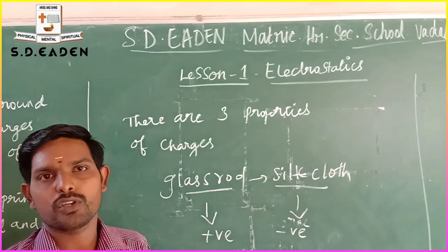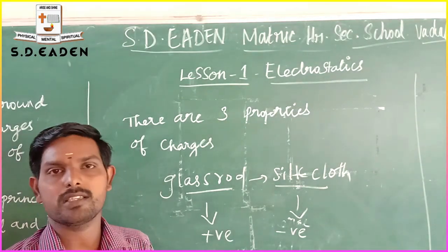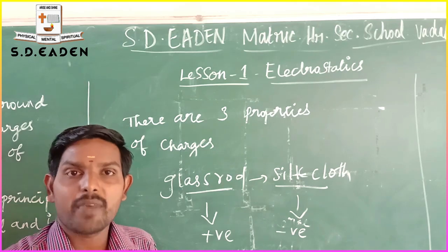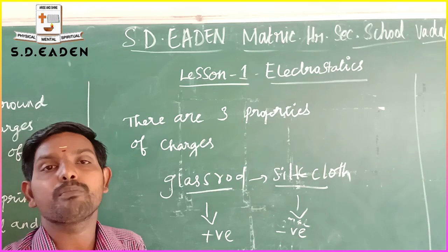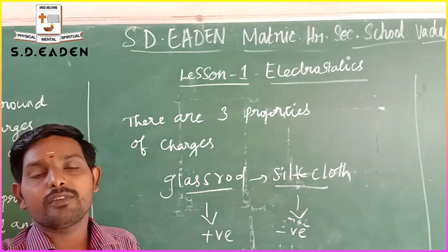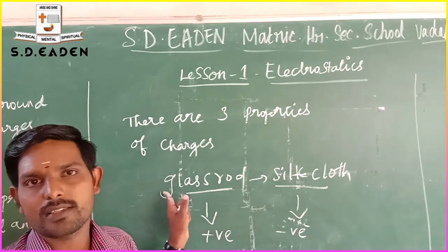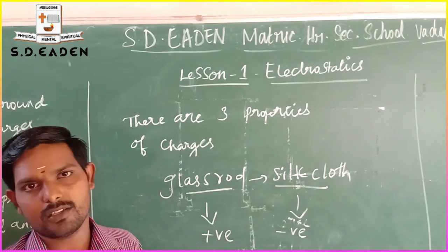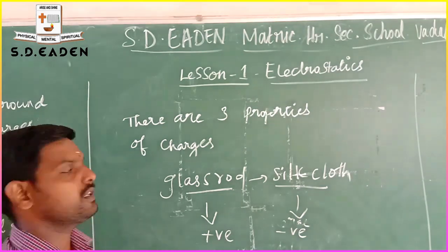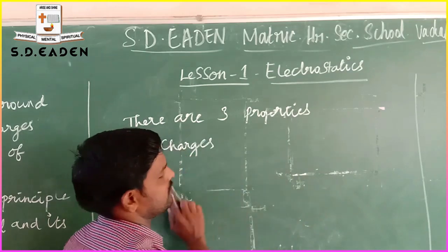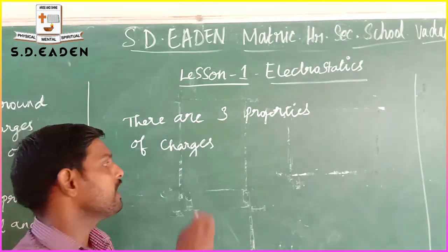This is the concept of conservation of electric charges: the total electric charge in the universe remains constant, charge can neither be created nor destroyed in any physical process, and the net charge is always zero. The third property is quantization of charges. The smallest unit used is E, where E denotes the fundamental unit of electric charge.